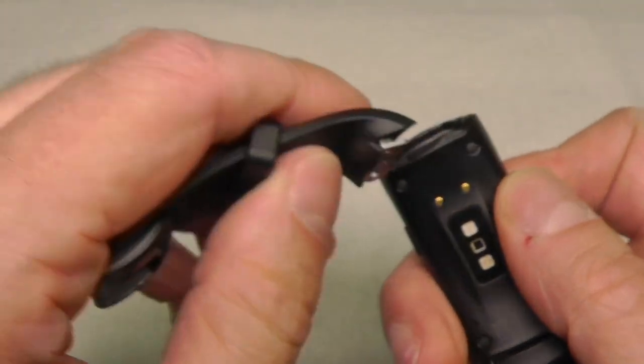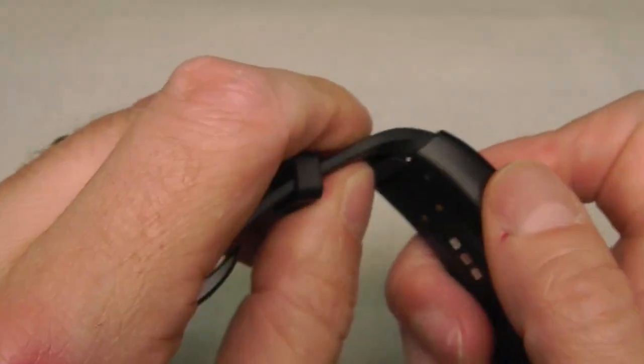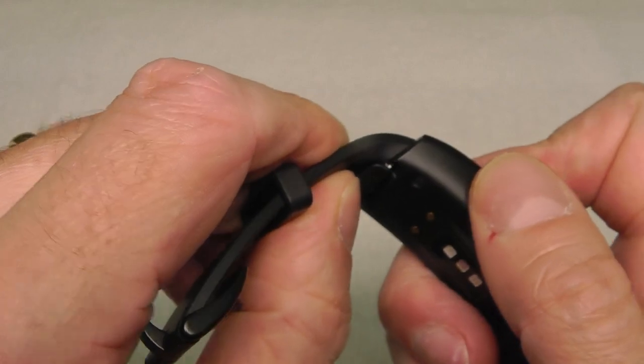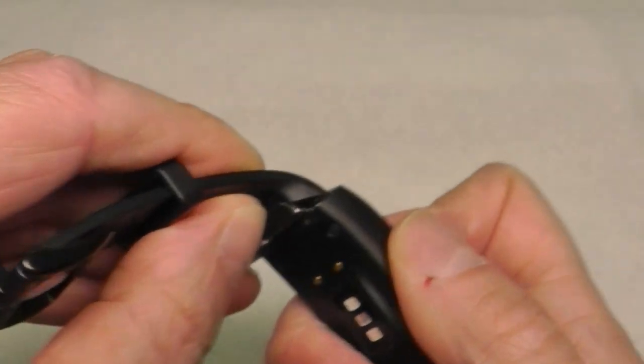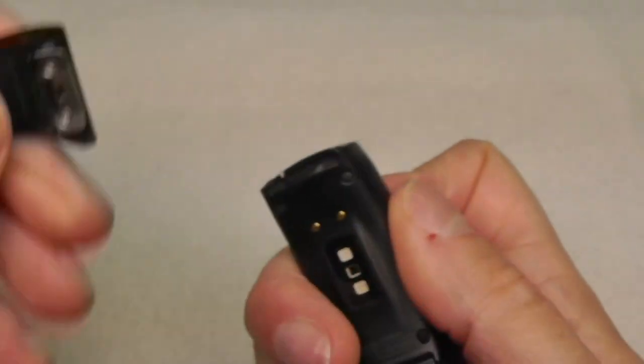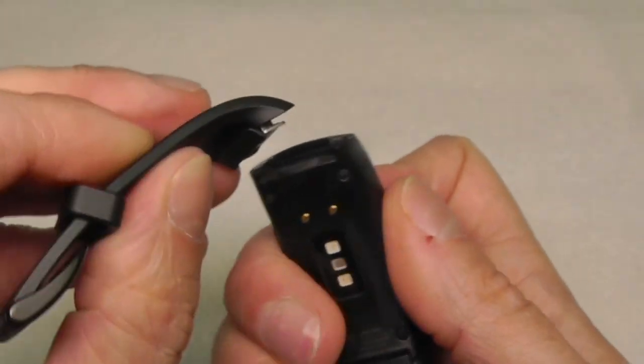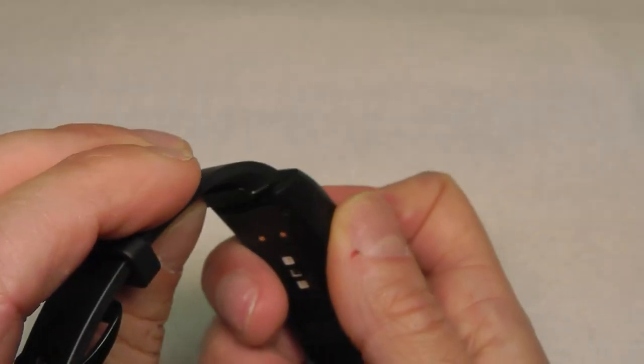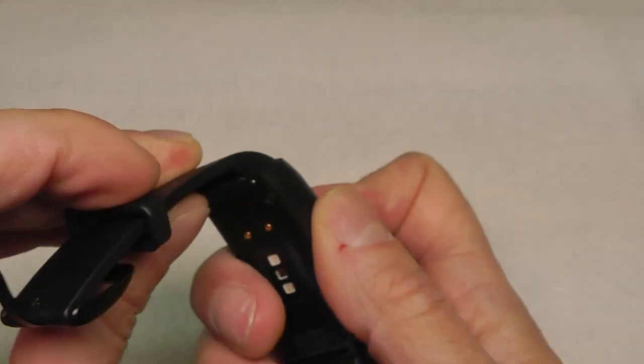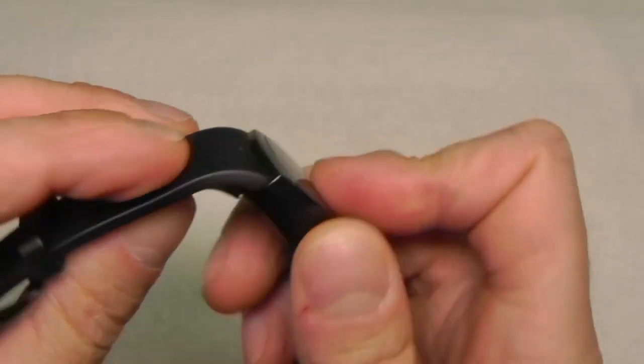If you don't hear the click sound, then you may want to start over. Just take it off and try adjusting or putting the armband into the right position again. Once you hear the click sound, you know you have everything done right.